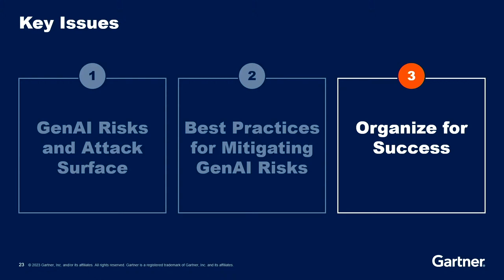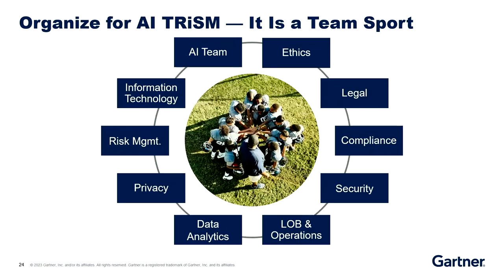That brings us to the final section: what do you do and how do you go about this? You have to organize yourselves, and it is a team sport. AI risk and security management is a team sport — it can't just sit in security or IT; you need everybody coming together. It would be optimal if you had line authority somewhere — maybe one day you'll have a chief AI officer with a chief AI risk officer reporting to that person, and we do see that in some of the largest financial institutions. But if your organization is like most, you'll need to set up a task force.